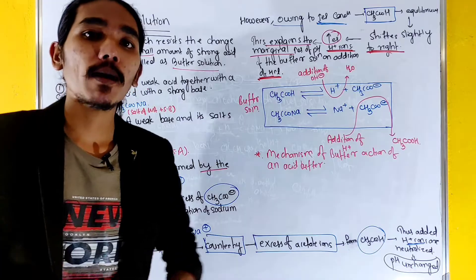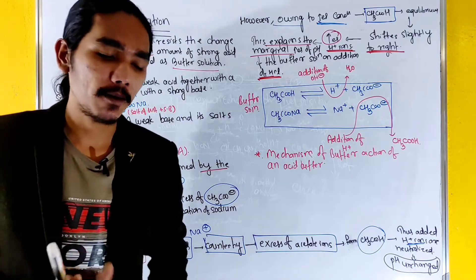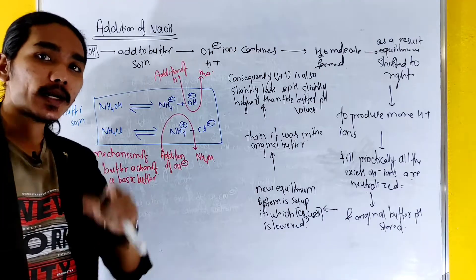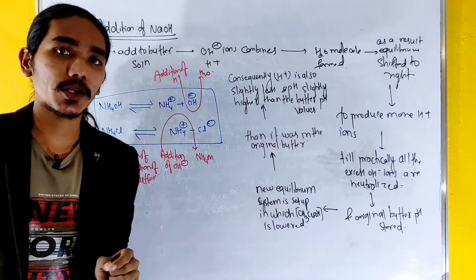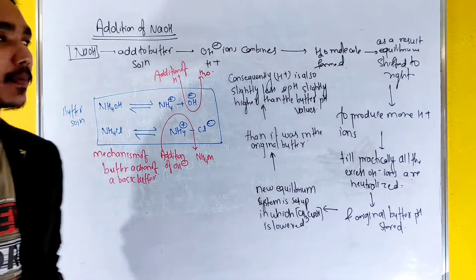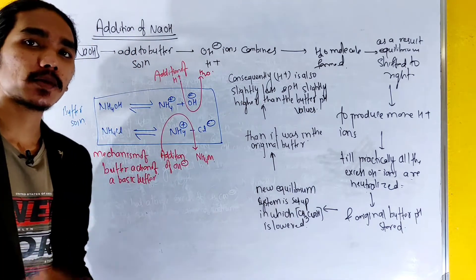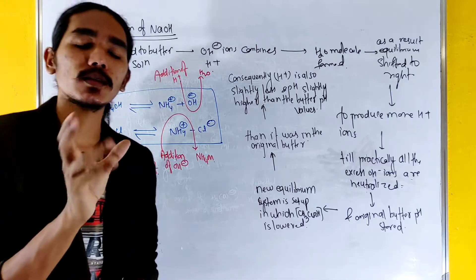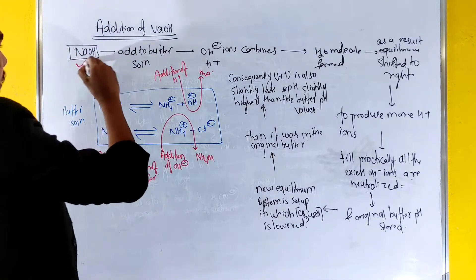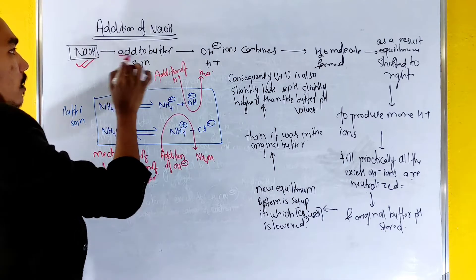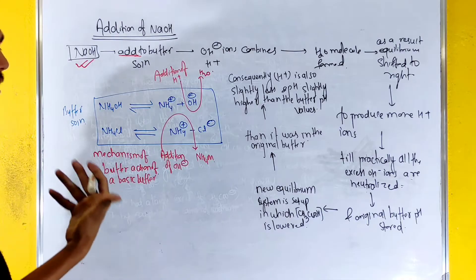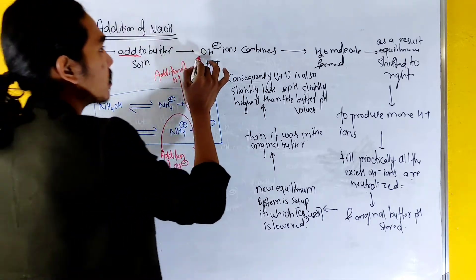Now, if we add NaOH — a strong base — to the buffer, the buffer will neutralize it. The NaOH is added and we use the same buffer solution to maintain the pH.